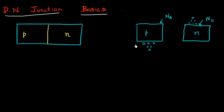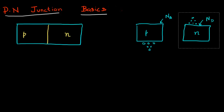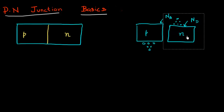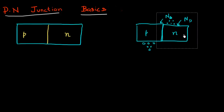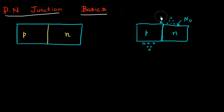A good way to think about how this PN junction works is to think about when we have these individual P and N type semiconductors. Essentially what I'm doing is I'm bringing them closer and closer and bringing them into contact with each other. So now what happens if I essentially put these two in contact?